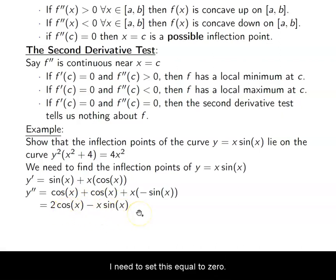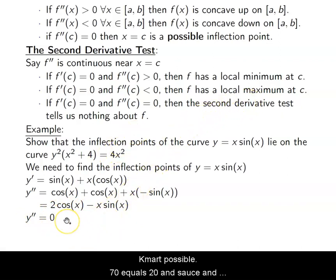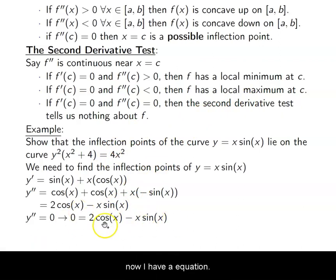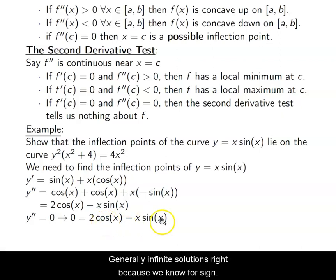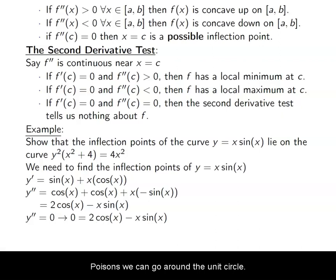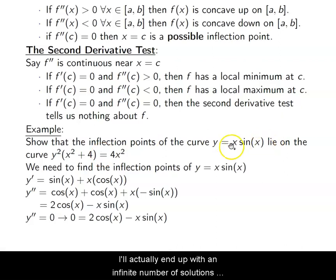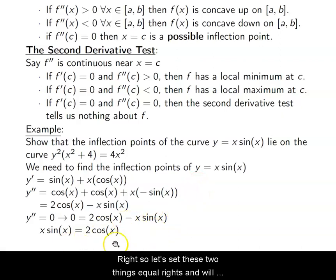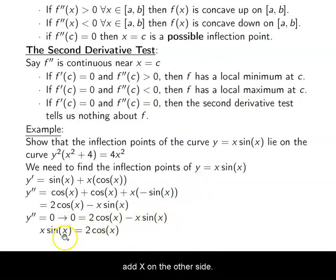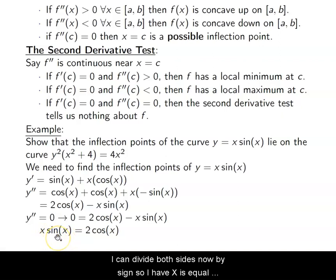I then set 2 cosine x − x sine x equal to zero to find my possible inflection points. Now I have a trigonometric equation, which means there are generally infinitely many solutions — because for sine equations we can go around the unit circle an infinite number of times. I'll end up with an infinite number of solutions here, which makes sense because it's a sine function. Setting these two things equal, I move x to the other side and divide both sides by sine, giving x = 2 tangent x.